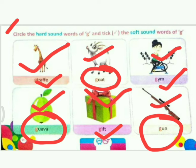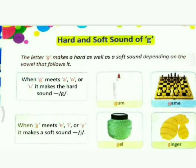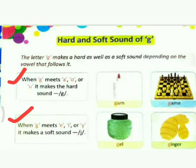Just like I have taught you the rules: when G meets A, O, or U, it makes a hard sound; and when G meets E, I, or Y, it makes a soft sound. Let's repeat again, kids — so remember: G with A, O, U makes a hard sound, and G with E, I, Y makes a soft sound.